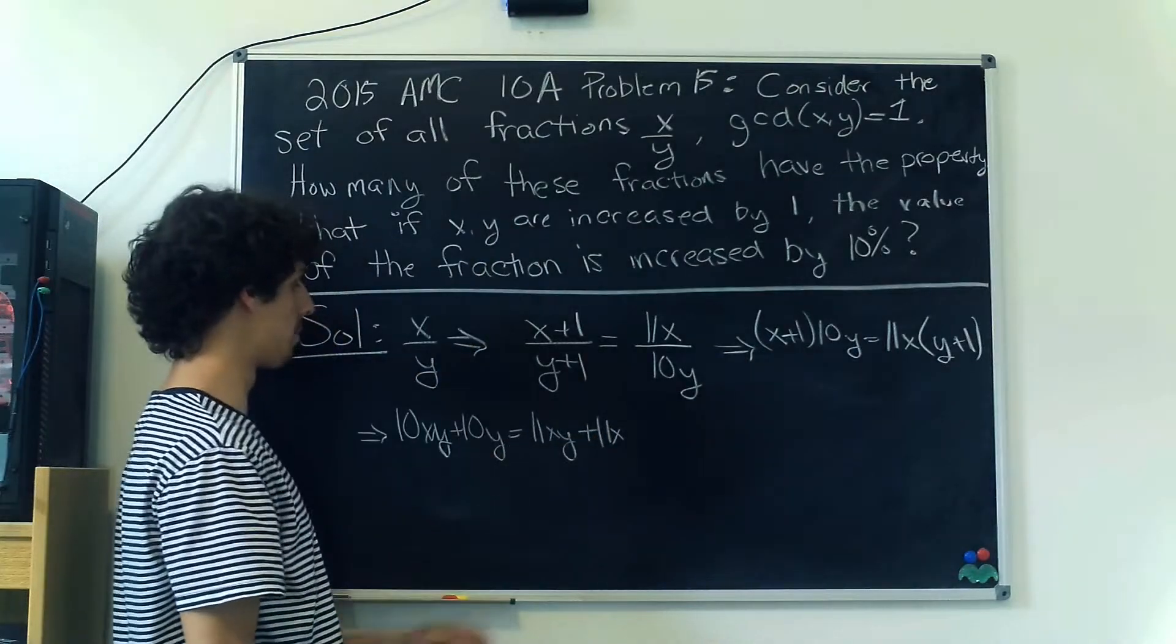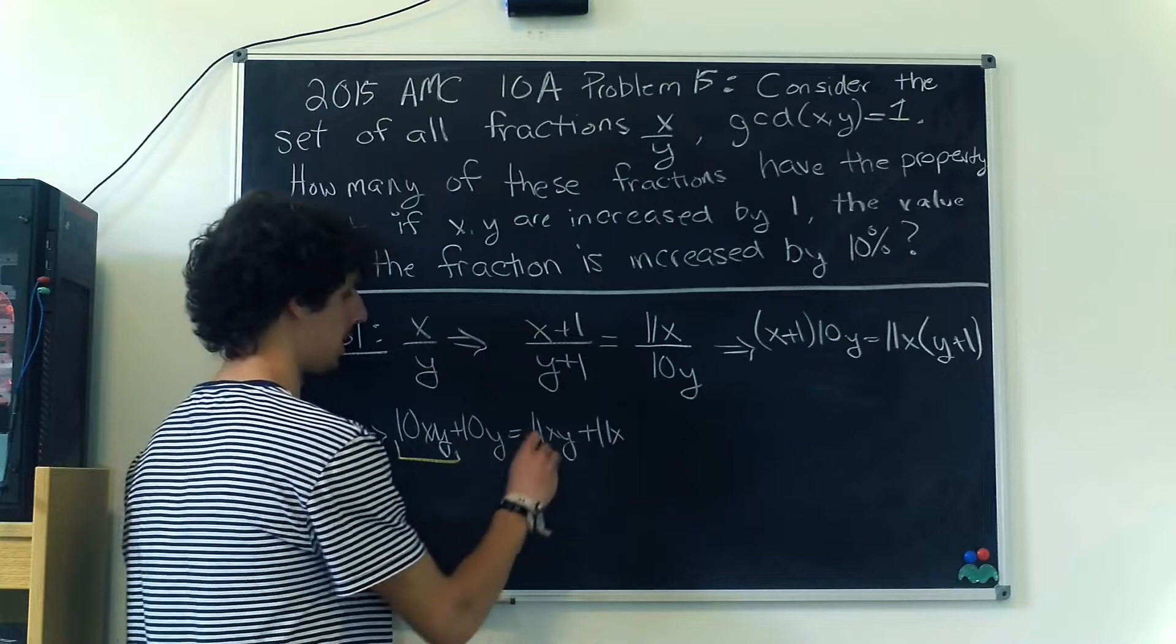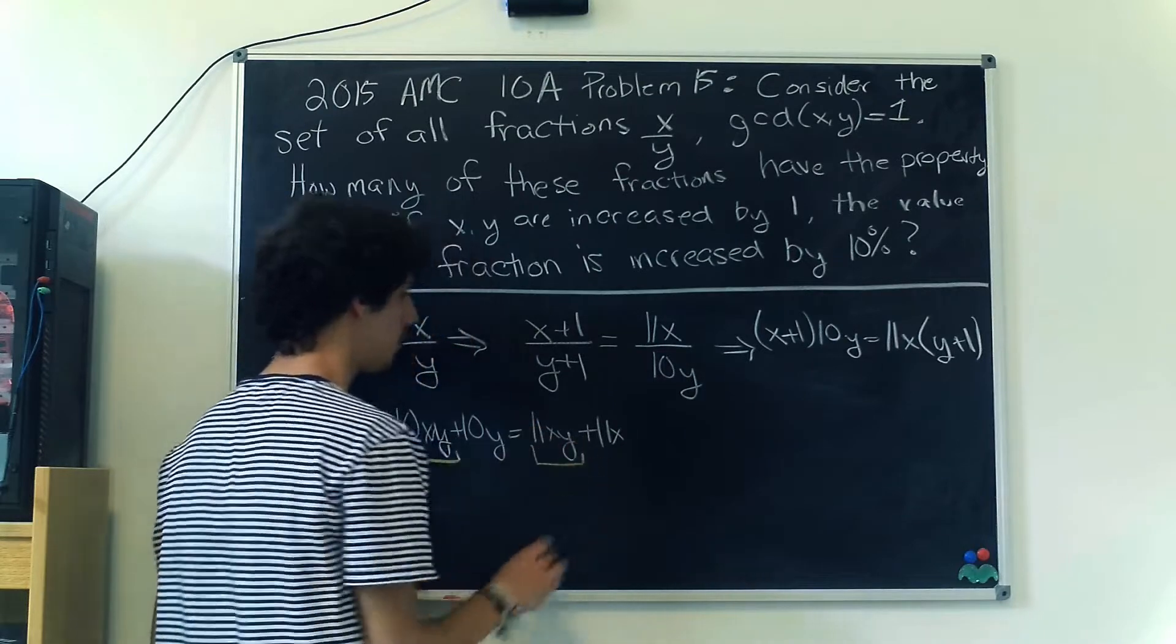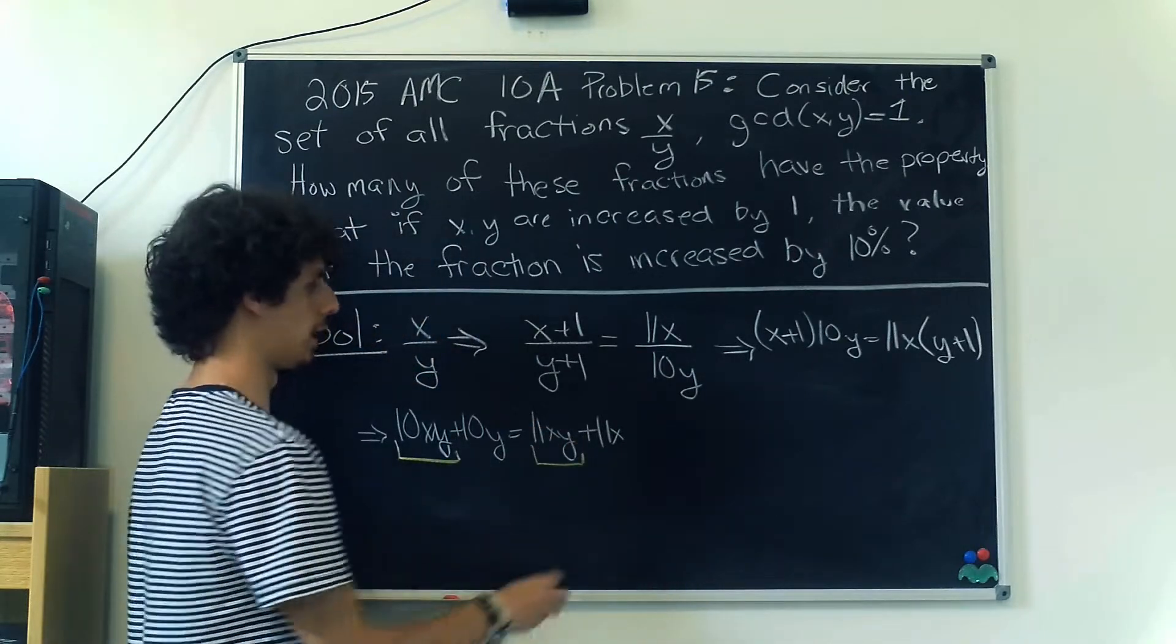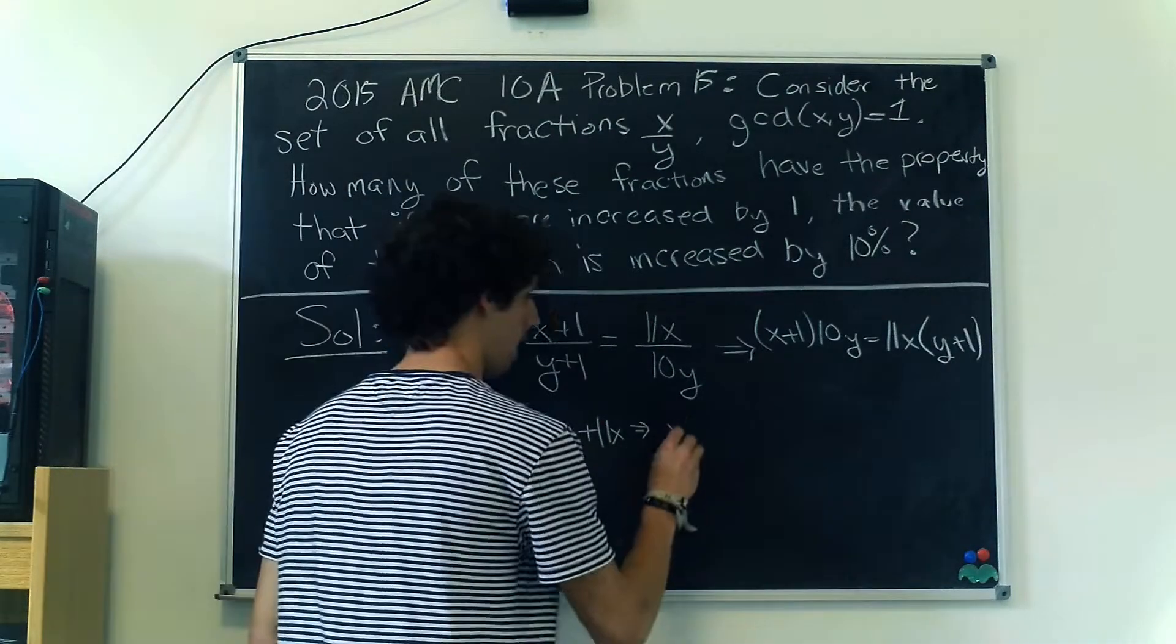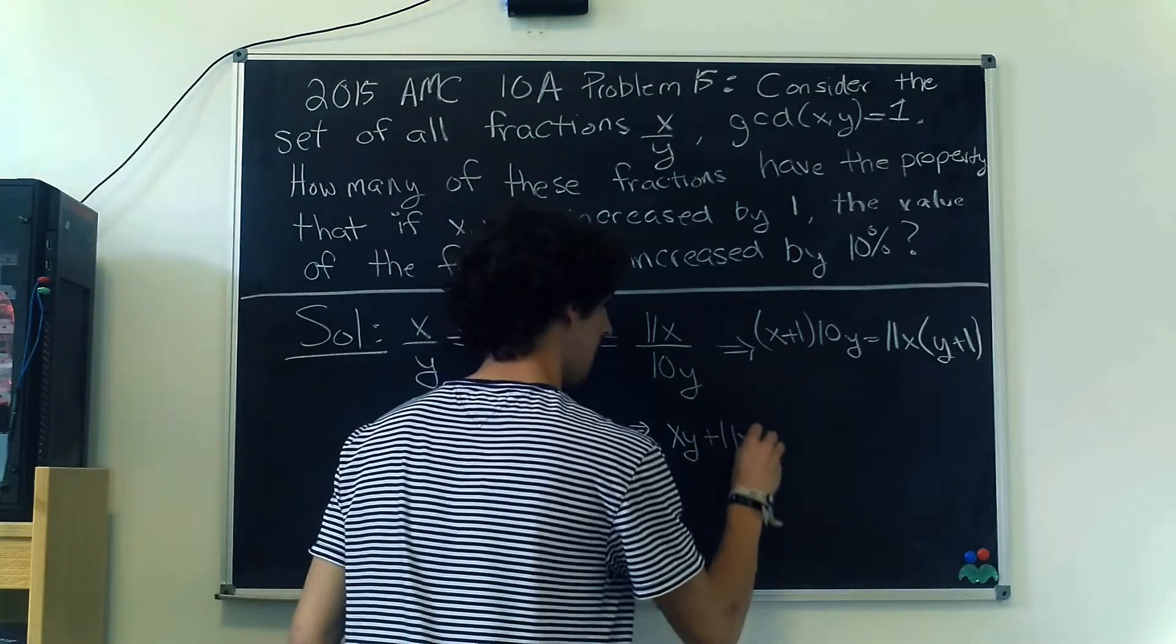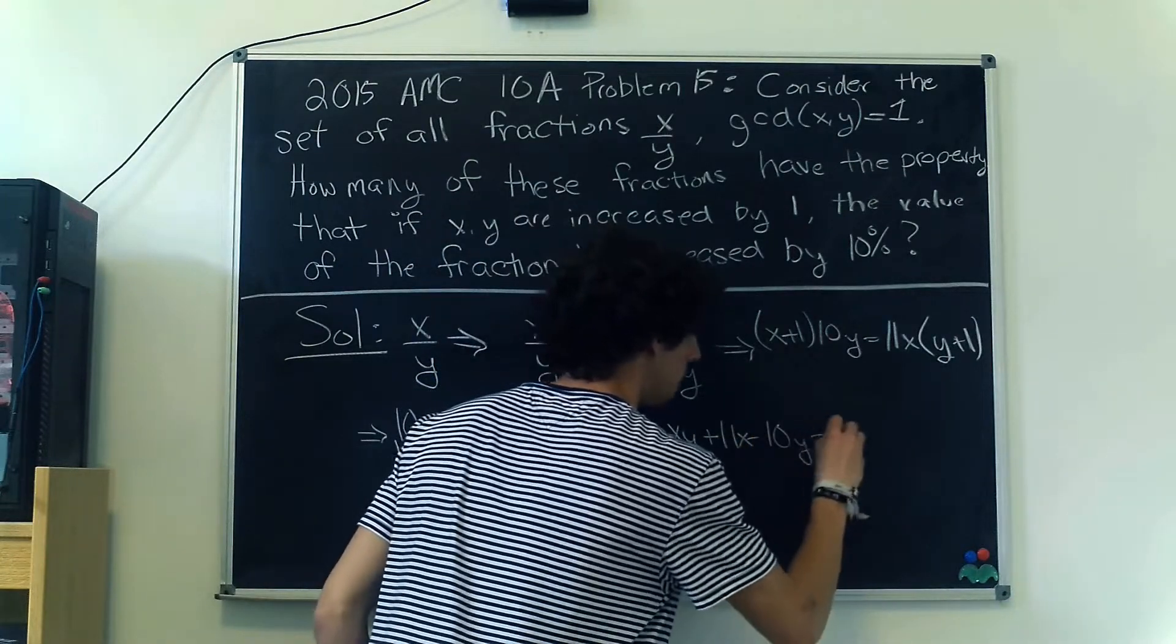Now let's combine like terms. We'll take this 10xy and combine it with this 11xy. Moving everything to the same side, we get xy + 11x - 10y = 0.